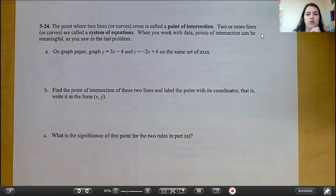Flip it over to 5.24. 5.24 says the point where two lines or curves cross is called a point of intersection. Two or more lines or curves are called a system of equations. When you work with your data, points of intersection can be meaningful, as you saw in the last problem. On graph paper, graph y equals 3x minus 4 and y equals negative 2x plus 6 on the same set of axes. So remember what you need when you are creating a complete graph. B, find the point of intersection of these two lines and label the point with its coordinates. That is, write it in the form (x, y). What is the significance of this point for the two rules in part A? So you're going to do 5.24 on your own. And then when you come back to class, we are going to go over this. If you have any questions, make sure you email us. And when you're uploading your pictures, make sure you email or you upload a picture of the notes and of your graph paper. So your job is to finish 5.24.